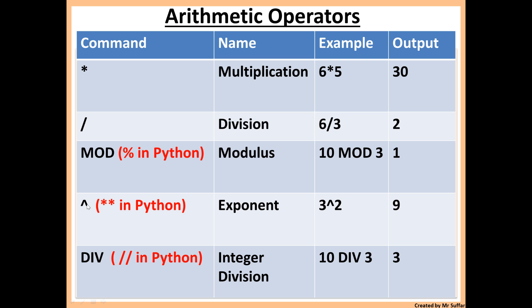Next we have exponent. Exponent just means 'to the power of.' In pseudocode it's represented by the arrow going up, and in Python we represent it by the double asterisk.